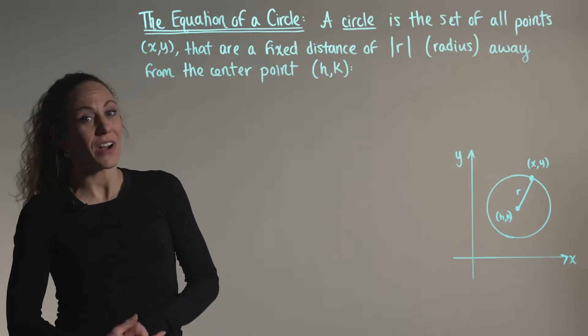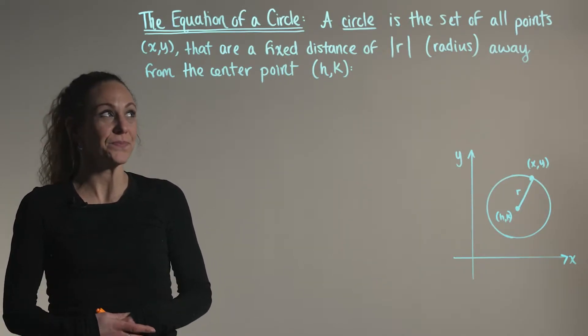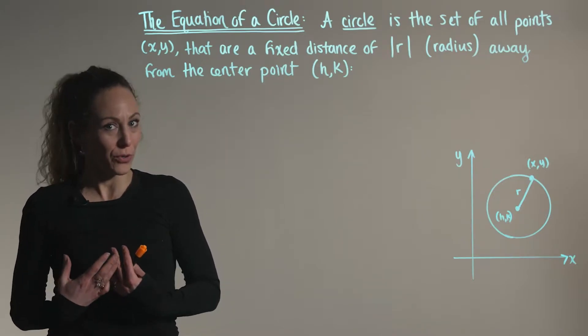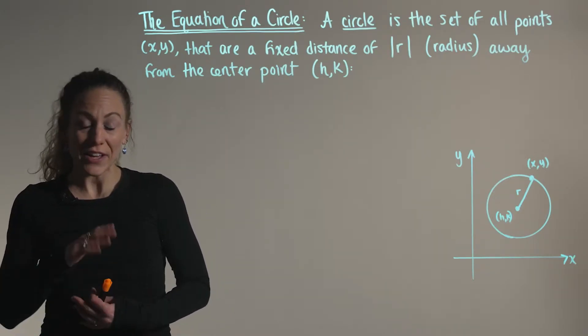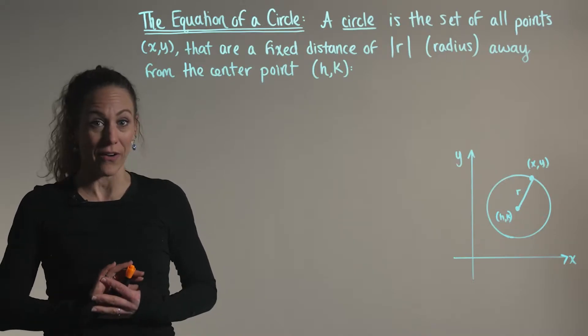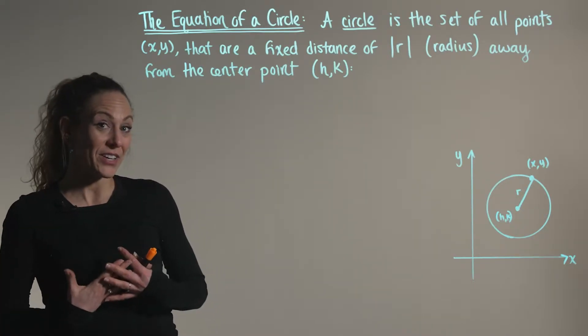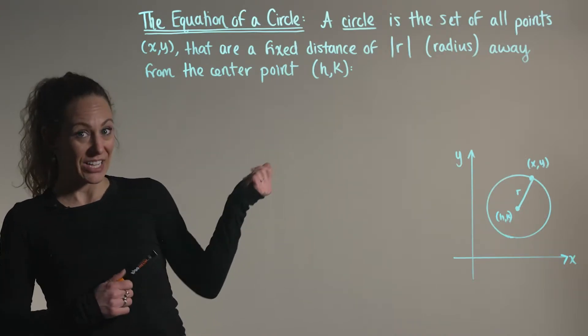Here we're exploring the equation of a circle in the plane. So a circle is described as the set of all ordered pairs (x, y) that are a fixed distance of r, the radius, away from a center point. And we define our center point here as the ordered pair (h, k).